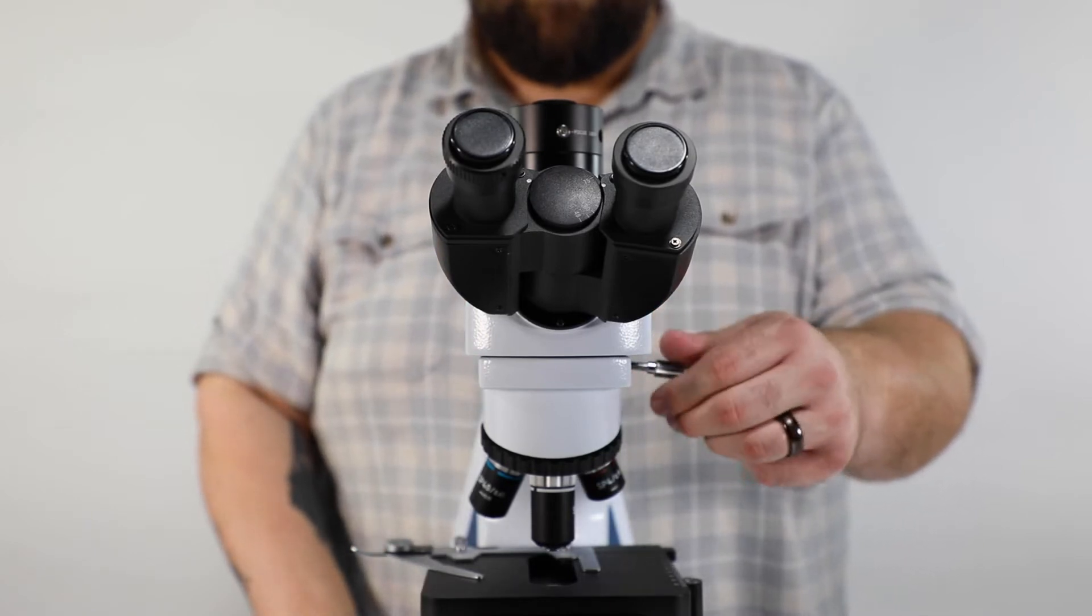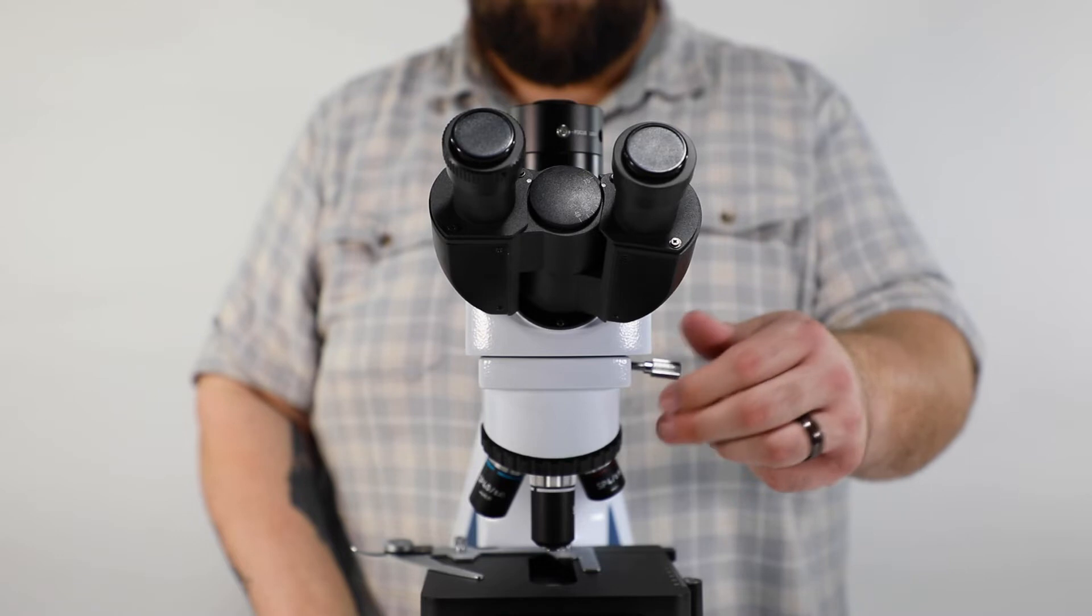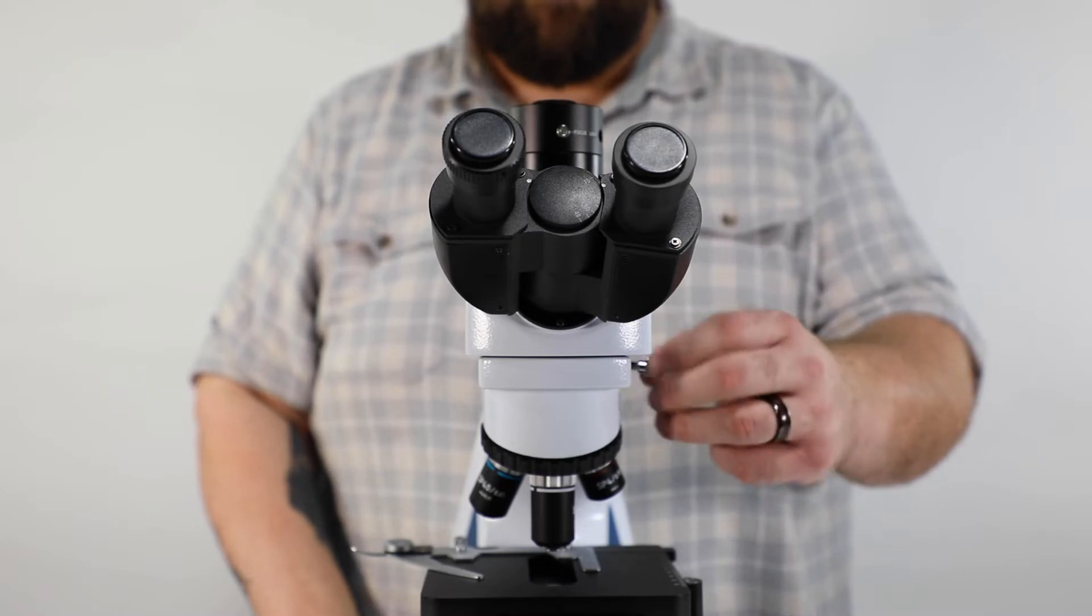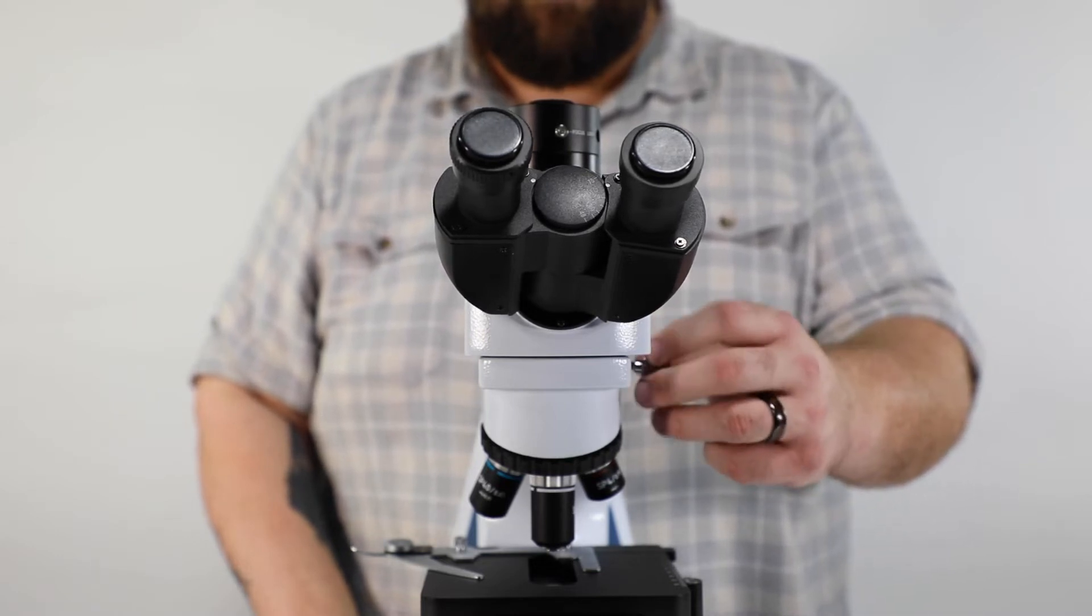Once the head is successfully placed in the port, turn the head 90 degrees so that the eyepiece slots are facing you again. Finally, tighten the thumb screw until the head is secure on the body.